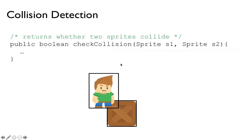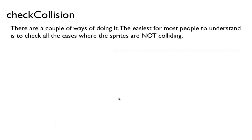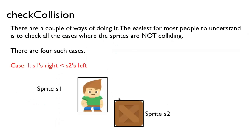So let's talk about collision detection. Here's a very useful method: we're going to write a method called checkCollision that takes two sprites, S1 and S2, and returns a boolean — true if the sprites collide, false if they do not. The easiest way to understand this is to figure out when the sprites are NOT colliding. There are four cases. Case 1: if the right side of S1 is less than or equal to the left side of S2, there's no collision. Case 2: if the left side of S1 is greater than or equal to the right side of S2, there's no collision either.